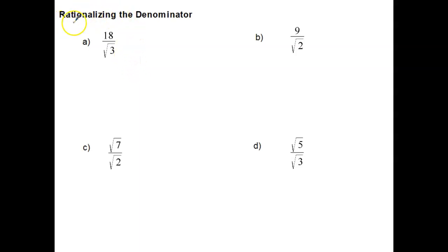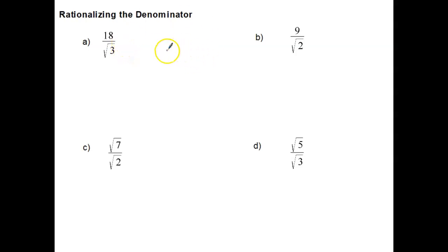So what does this word rationalize mean? Any number that can't be represented as a fraction is what's considered an irrational number. Numbers that are non-repeating decimals — so like 0.11111, that would be a rational number. But the square root of 3 is some decimal that continues on and on without any repeats, and so it would be considered an irrational number.